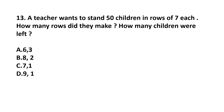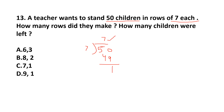Question 13: A teacher wants to stand 50 children in rows of 7. How many rows are made and how many children are left? 50 divided by 7: seven sevens are 49, so there are 7 rows and 1 child is left. Answer: option C, 7 rows and 1 remaining.